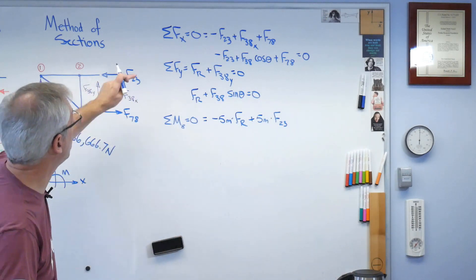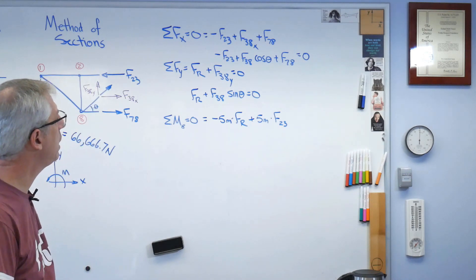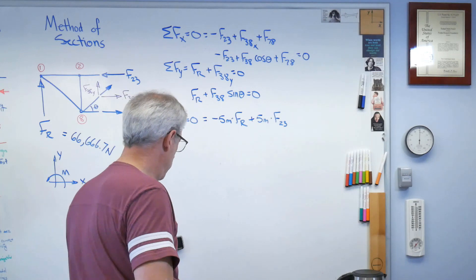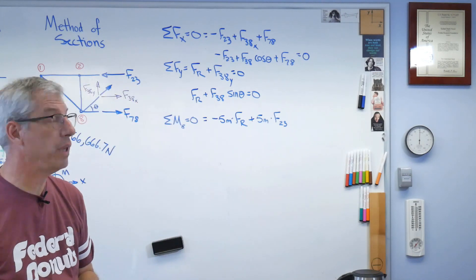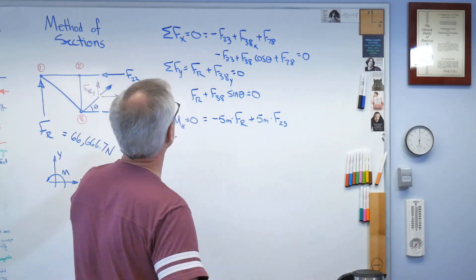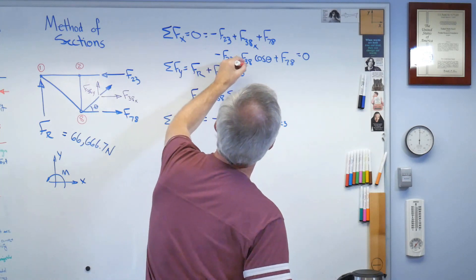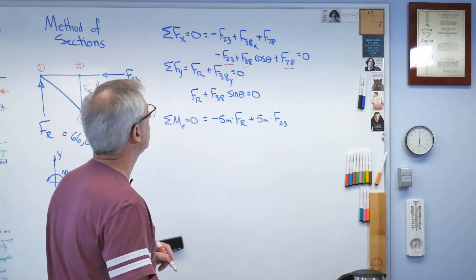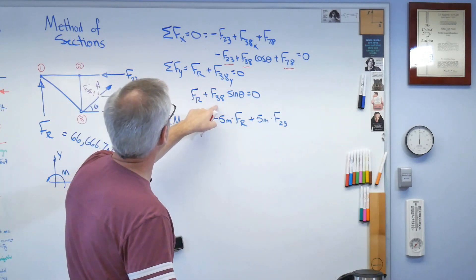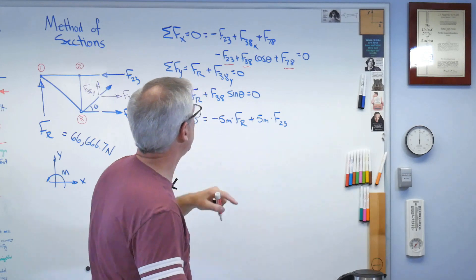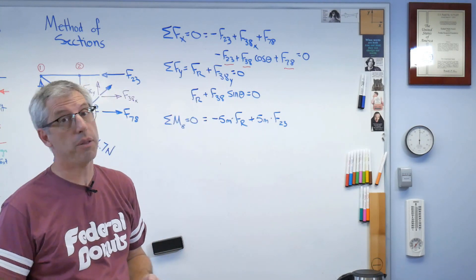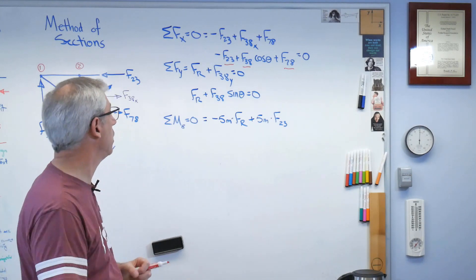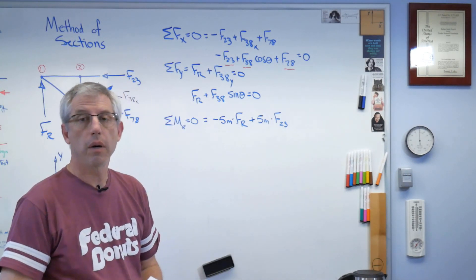I got 1, 2, 3 equations. How many unknowns do I have? Let's draw a little red underline under each of the unknowns, each of the variables I don't know. I don't know F23, I don't know F38, and I don't know F78. Well, there it is again, and there it is again. There's only 3 things I don't know. I've got 3 equations, 3 unknowns, I'm good to go.